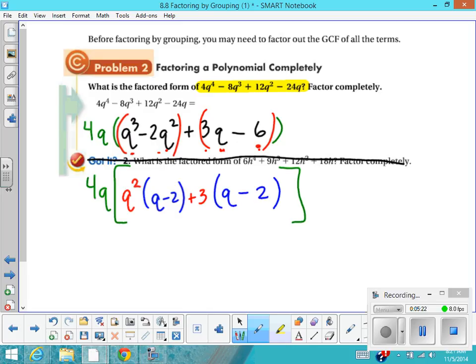Let's copy down the GCF from originally and the brackets. And now let's put together this q² + 3 times the quantity of q - 2.